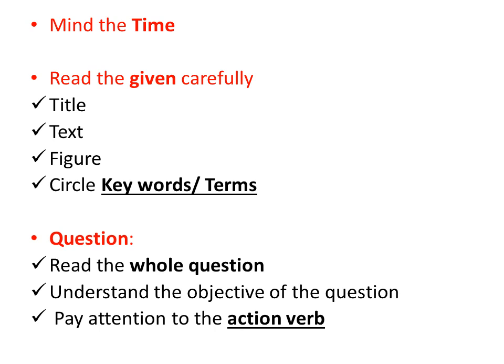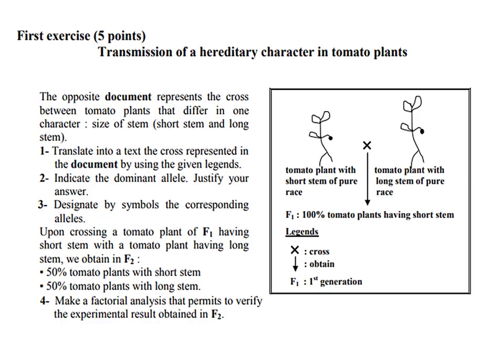For number three, pay attention to the action verbs — the action verb is going to give you the direction of what you are supposed to write. This is the exercise we're going to solve in this video. The title says 'Transmission of Hereditary Character in a Tomato Plant,' so it's clear we're talking about genetics and how phenotypes or characteristics are transmitted from one generation to the other. I want you to pause the video, read the given — the title, the text, and the figure — circle the important key terms, and start thinking about what those key terms mean.